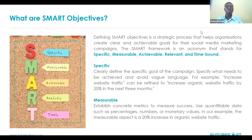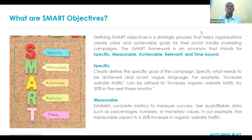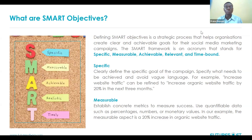Defining SMART objectives is a strategic process that helps businesses create clear and achievable goals for social media marketing campaigns. SMART is an acronym that stands for Specific, Measurable, Achievable, Relevant, and Time-bound — meaning your objective must be specific, you must be able to measure its impact, it must be achievable, relevant to your broad organizational goals, and time-bound. Let's discuss each in bits.